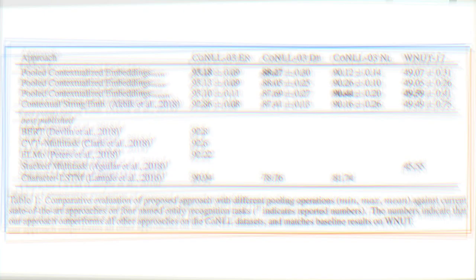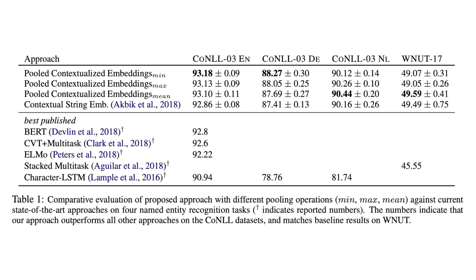The proposed method is evaluated using the NER datasets CoNLL 2003 and WNUT17. The paper uses the FLAIR framework and the standard BiLSTM-CRF framework in all experiments. As you can see in Table 1, the pooled contextualized embeddings with different pooling operations achieve state-of-the-art results in all four datasets at the time of publication, and all three types of pooled contextualized embeddings outperformed the traditional contextualized embeddings.